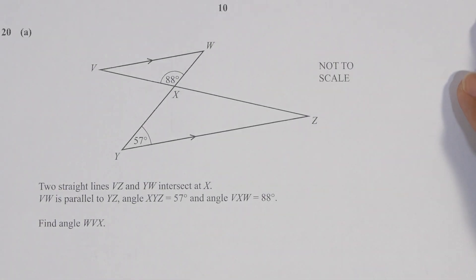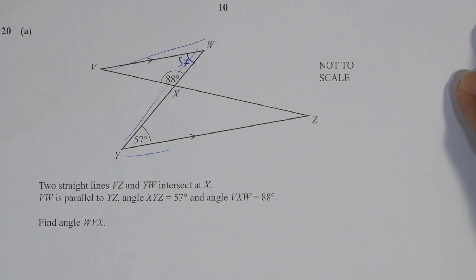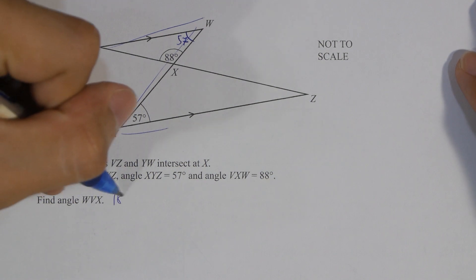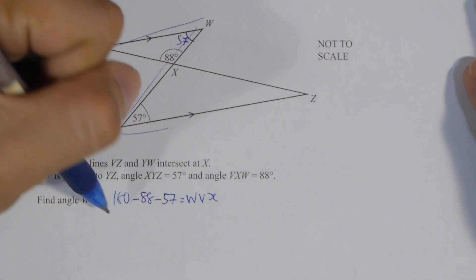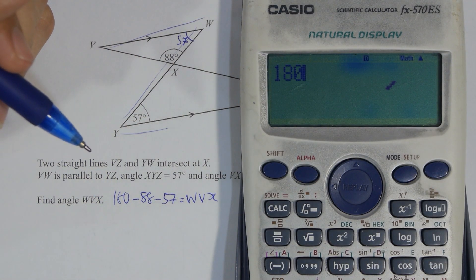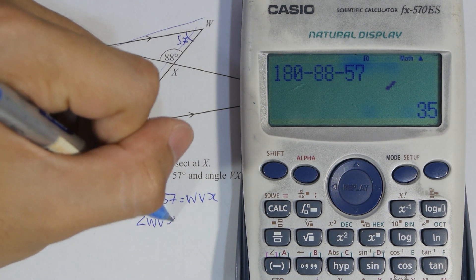Question 20. First thing first, you are required to identify, since VW and YZ is parallel, so angle VWY is actually 57. So 180 minus 88 minus 57, then you will get 35 as the final results.